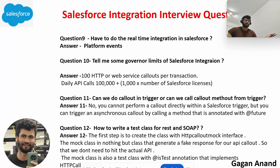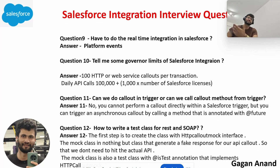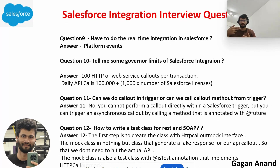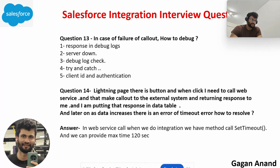Twelfth question: how to write a test class for REST callouts? When writing a test class, you can't actually make a real callout. What we do is create a mock response. To create the mock response, we create a class that implements the HttpCalloutMock interface. We create a fake response and then call that class to successfully cover at least 75% of the lines in your callout class. Simple answer: create a mock response using the HttpCalloutMock interface, which produces a fake response to help cover the code lines.